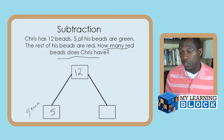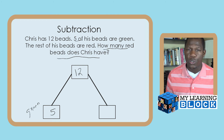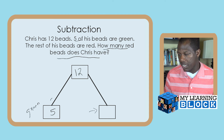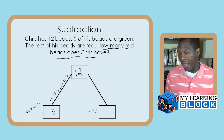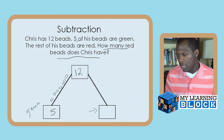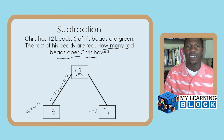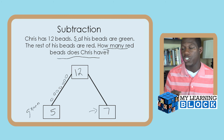Now, because we're trying to find the unknown number, we're going to count up the mountain using circles. Starting from five, we count up: six, seven, eight, nine, ten, eleven, twelve. We've reached 12. Now count how many circles we drew going up this side of the mountain: one, two, three, four, five, six, seven. So we count seven circles, and we put seven in the unknown spot.